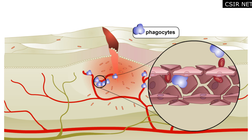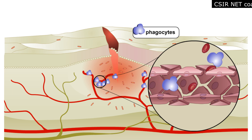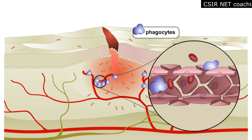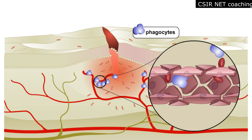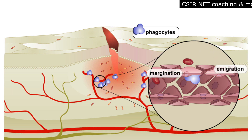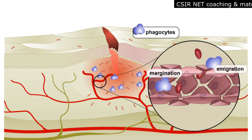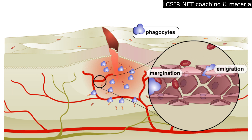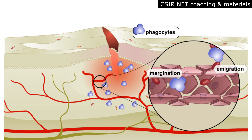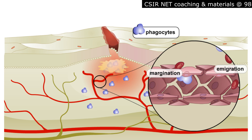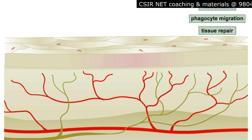Inflammation has three main functions: to destroy the agent causing injury, to limit the effect of the agent on the rest of the body, and to repair and replace the damaged tissue. The three stages are: first, vasodilation; second, phagocyte migration; third, tissue repair.